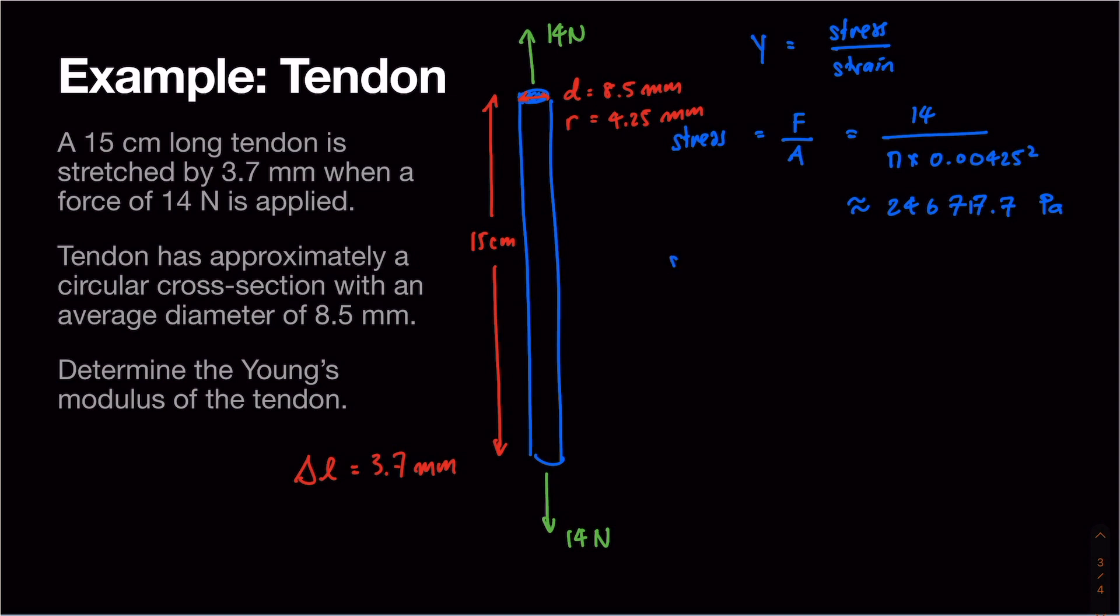We also need to know the strain. Strain equals the change in length over the length. These need to be the same units, so we'll use meters. 0.0037 meters divided by 15 centimeters, which is 0.15 meters, gives us a strain of around 0.02467.